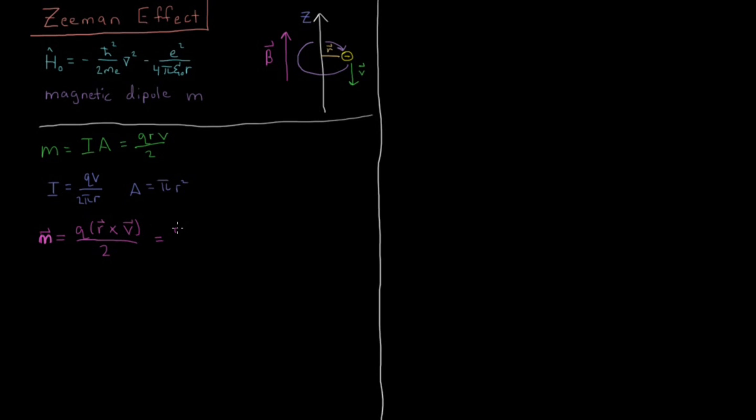And this will also be equal to Q over 2m times the angular momentum vector. Now to do a sidebar on angular momentum for a second. Angular momentum, if we remember, is the cross product of position relative to some axis of rotation and momentum. And momentum is just mass times velocity, so this r cross p is equivalent to the mass times the cross product of that position vector and the velocity vector. So in this case, it would be the cross product of this r vector here and this v vector here, which are perpendicular to each other in the case of circular motion.